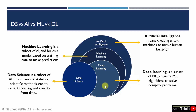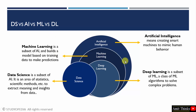Generative AI is also part of AI. AI is a superset, as you can see in this Venn diagram. It is a superset that includes machine learning, deep learning, and data science.